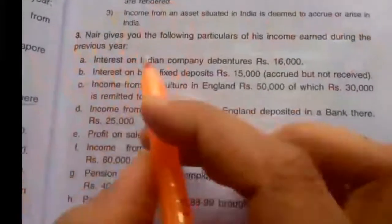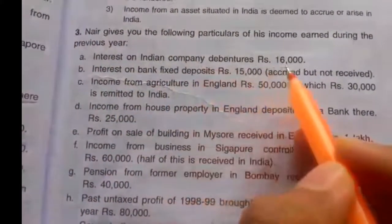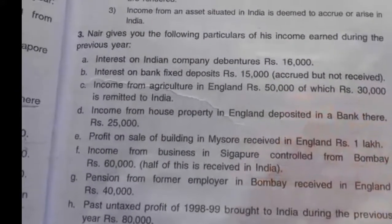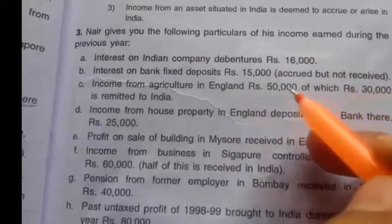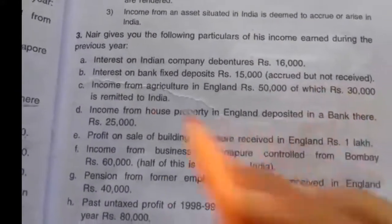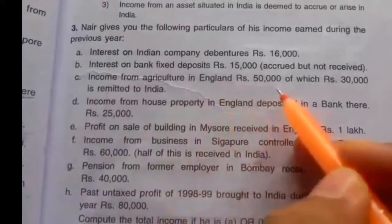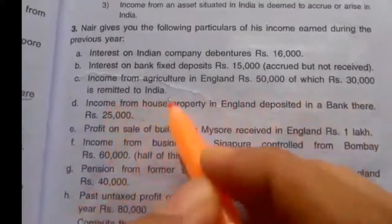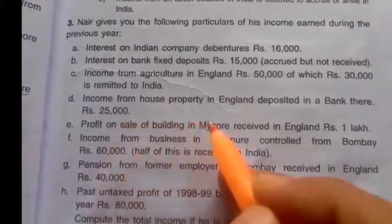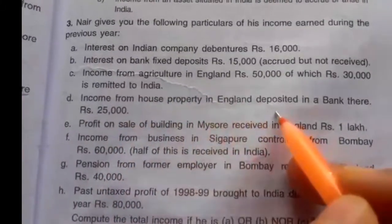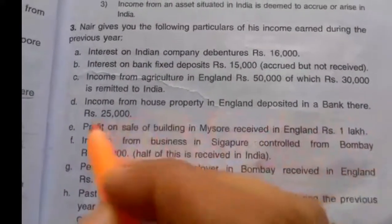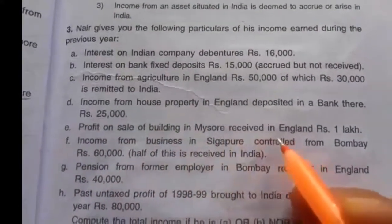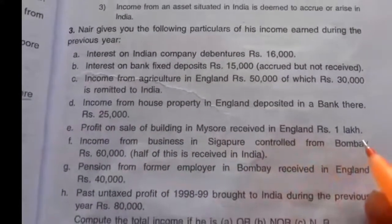The income items are: first, interest on Indian company debenture Rs. 16,000; second, interest on bank fixed deposit Rs. 15,000, accrued but not received; third, income from agriculture in England Rs. 50,000, of which Rs. 30,000 is remitted to India; fourth, income from house property in England deposited in a bank there, Rs. 25,000.